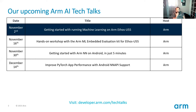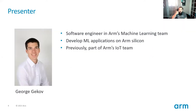Today's talk is getting started with running machine learning on Arm Ethos U55. In two weeks we'll have a hands-on workshop covering the same material. Later, on November 30th, we'll have getting started with Arm NN on Android in just five minutes, and on the 14th, how to improve PyTorch app performance with Android NN API support. I'd like to thank our presenter, George Geckhoff, a software engineer on Arm's machine learning team who develops ML applications on Arm's silicon and was previously part of Arm's IoT team.